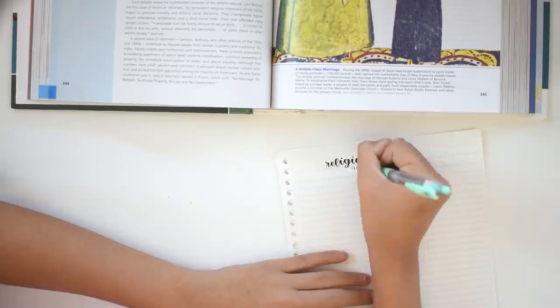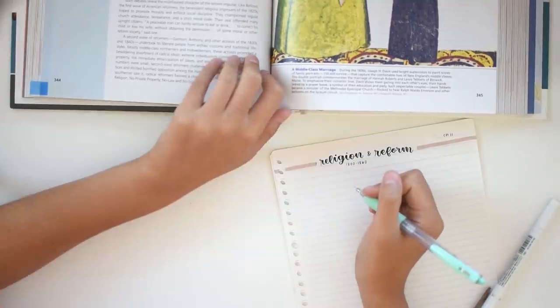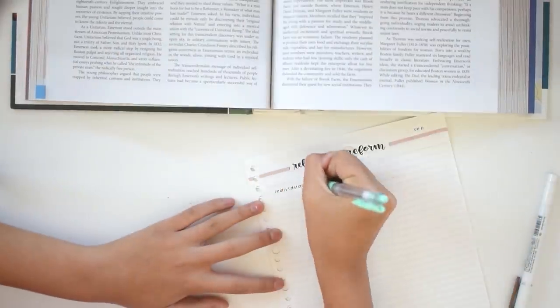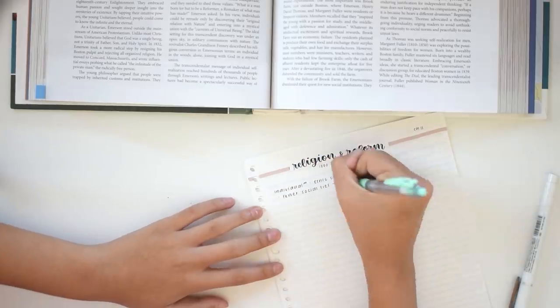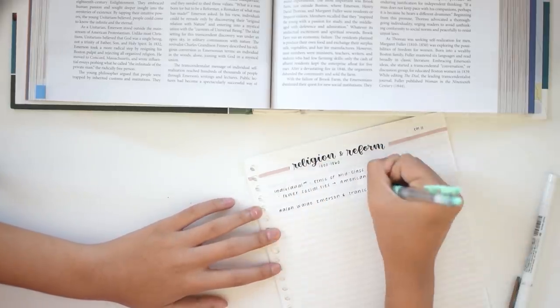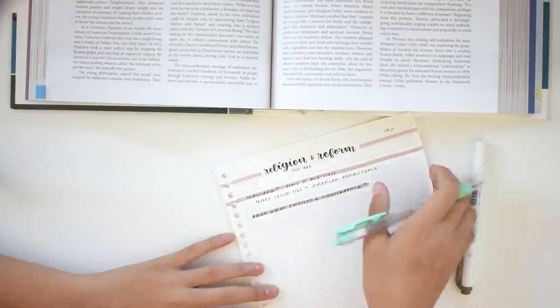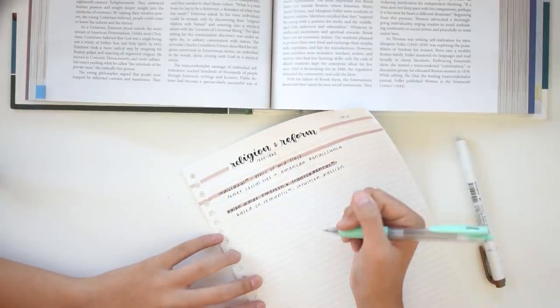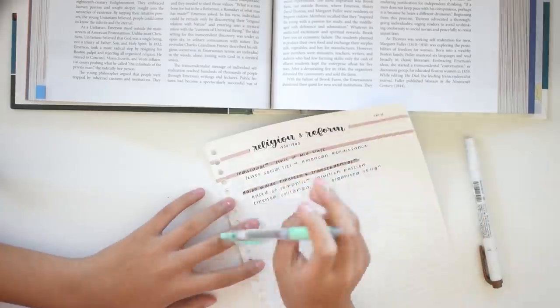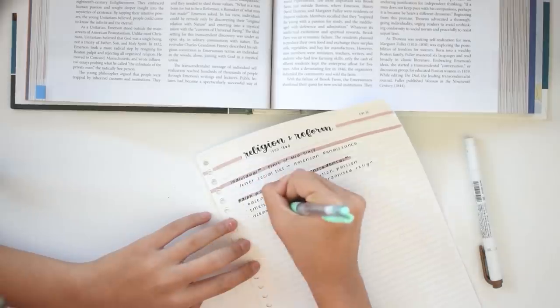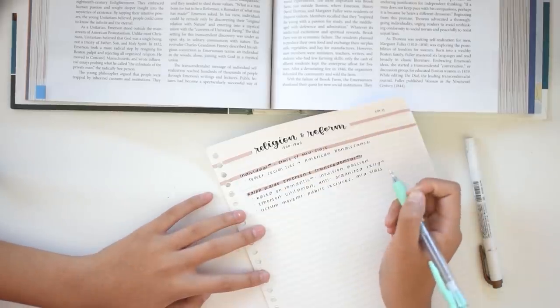If you'd like a more detailed overview of how exactly I take history notes, I'll link some videos in the iCard thing. One of them is my video about how I take history notes. That video was about AP Euro. I've changed my note-taking style a bit since then, so please do let me know if you'd like me to make an updated how to take history notes video.